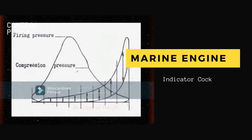The average height of the diagram is found by measuring its area and dividing this area by the length of the card. The area can be found by using the mid-ordinate rule or similar, or by using a planimeter. The length of the diagram should always be the same as the throw of the cam, but should be measured in any case, as any deviation from the recorded length indicates a fault with the indicator mechanism.